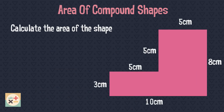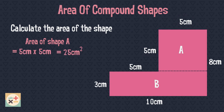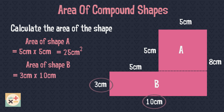Let's have a look at an example. First we need to decide how we are going to divide the compound shape into basic shapes. Here we have split the shape into two smaller basic shapes and have labelled them A and B. We can now use the measurements given to calculate the area of shape A and then shape B. Now that we have calculated both areas, we can add these together to find the area of the whole shape.